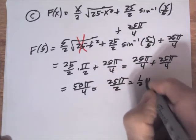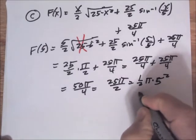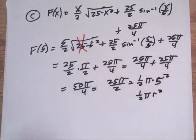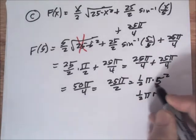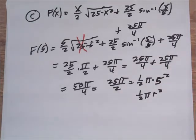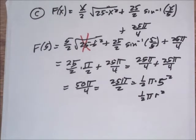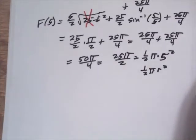So this is one half pi times 5 squared. The formula for the area of a semi-circle is one half pi r squared — the full circle has area pi r squared, so the semi-circle is one half pi r squared. This verifies that the function gives us what we would expect, which is the area of the semi-circle.